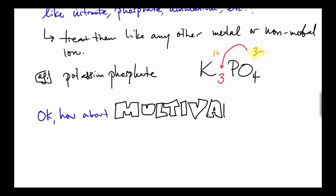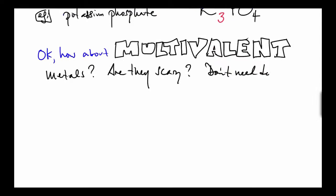There's another thing that people get freaked out about: multivalent metals. Are they scary? They don't have to be. Multi means many, and valence means many stable electron valence shell configurations, so there's more than one valence configuration.